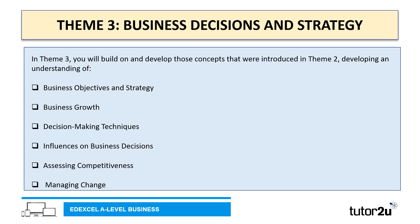Theme three is called Business Decisions and Strategy, and theme three really builds on and develops some of the concepts introduced in theme two. In theme three, you will develop an understanding of business objectives and strategy — things like mission statements and corporate objectives. You will look at business growth and decision-making techniques such as investment appraisal, critical path analysis and decision trees, as well as the influences on business decisions, assessing competitiveness and managing change, all within the context of the business environment.